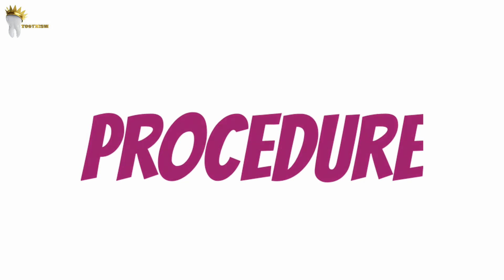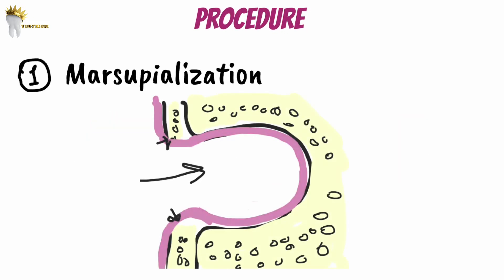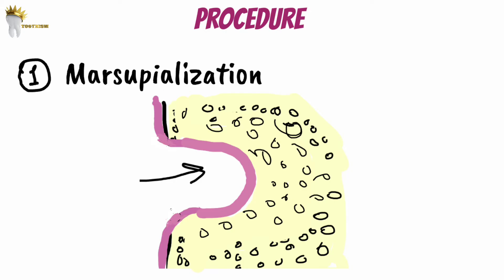Let's see how it's done. The first step is obviously marsupialization. Then we wait for osseous healing. Once the cyst has decreased to a size that enucleation is possible and bone is covering the adjacent vital structures, enucleation is done.